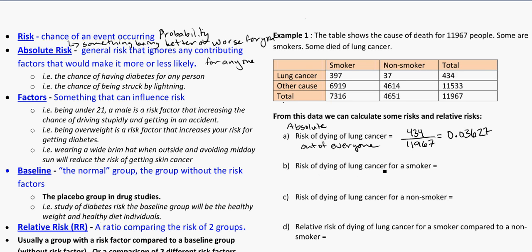What is the risk of dying of lung cancer for a smoker? So this is no longer absolute risk because I'm narrowing it down — here we're taking into account a factor. A factor is something that can influence your risk. For instance, being under 21 and male is a risk factor for increasing the chance of driving and getting in an accident. Being overweight is a risk factor that increases your risk of getting diabetes. Wearing a wide-brim hat outside and avoiding midday sun will reduce your risk of getting skin cancer. So factors can be good or bad.